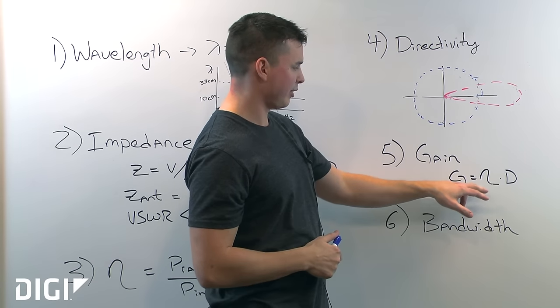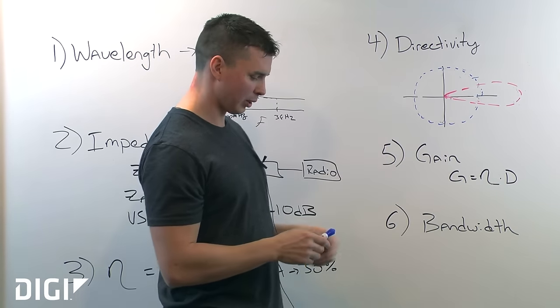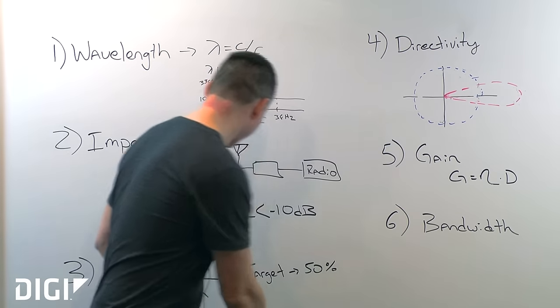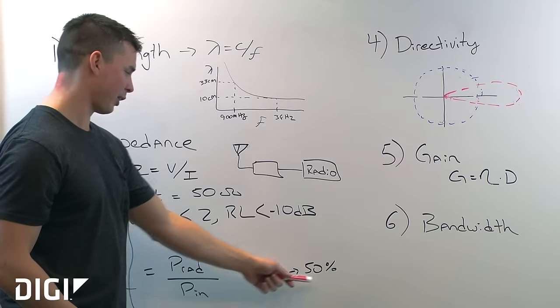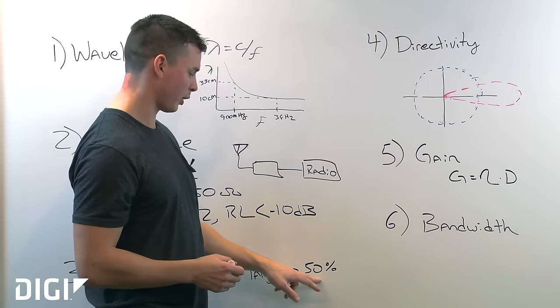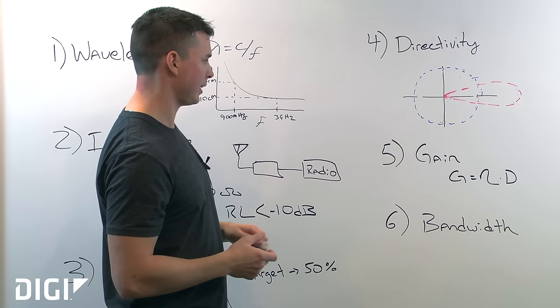Gain is defined as the efficiency times the directivity. So gain is always going to be lower than directivity. As we mentioned, the efficiency we were targeting at 50%, you're probably not going to get anywhere close to 100%, but it's really dependent on the antenna design.